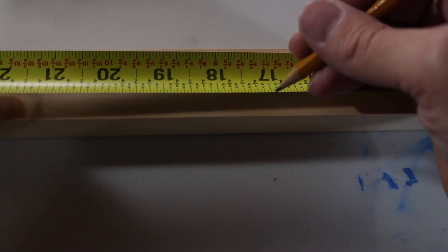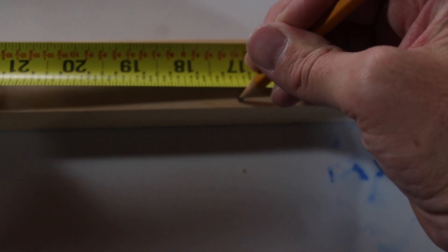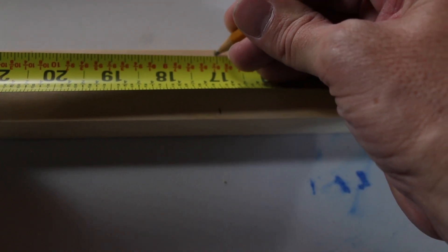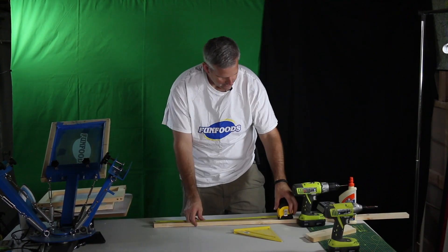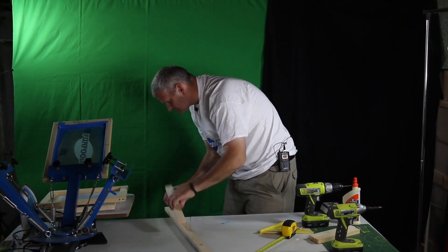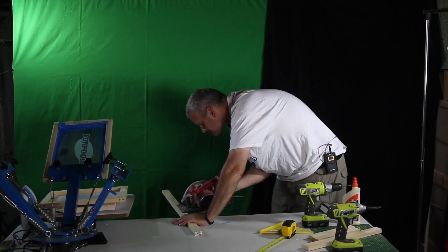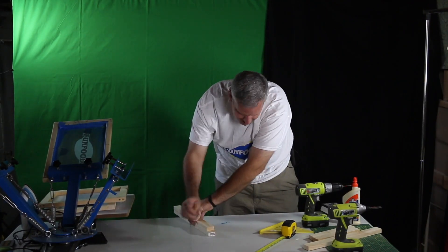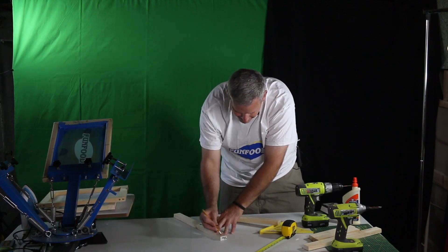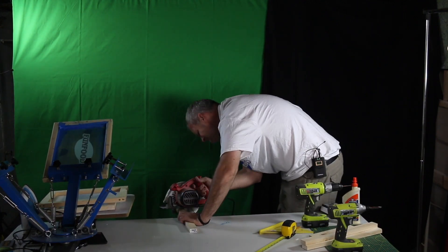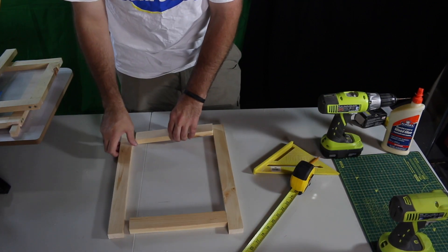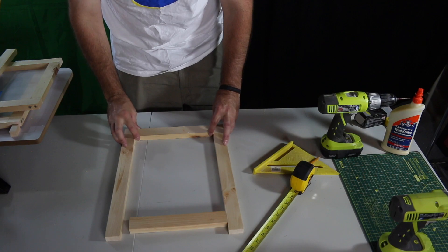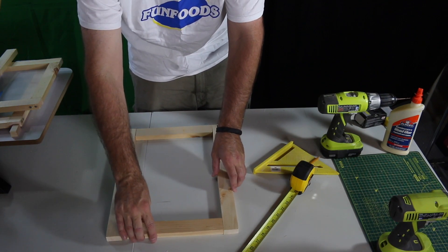Now we're just going to measure out 17 inches on this and then we'll draw a line and cut it. Now just lay out your wood pieces and set it up just like the frame just to make sure everything's cut in order. And once it's laid out then we can move on.